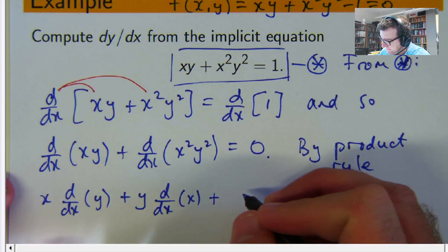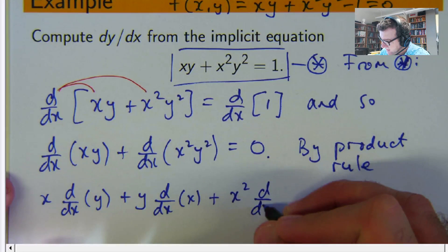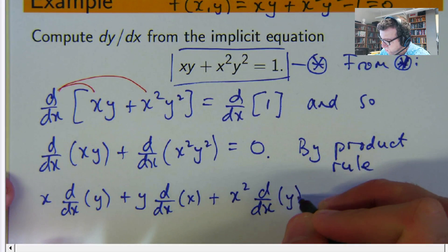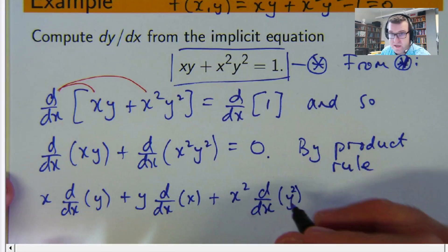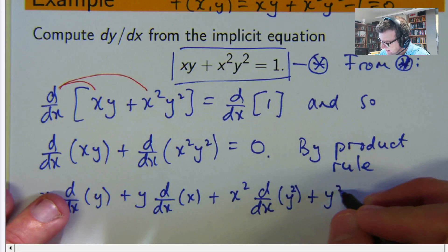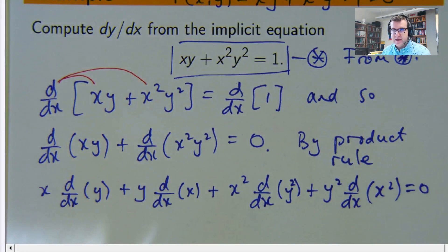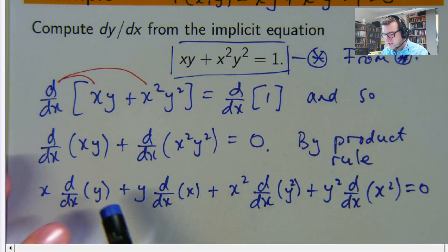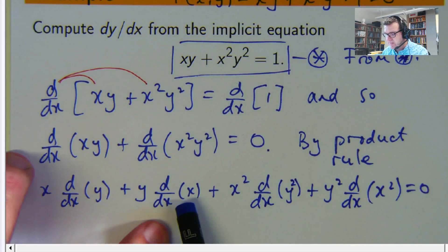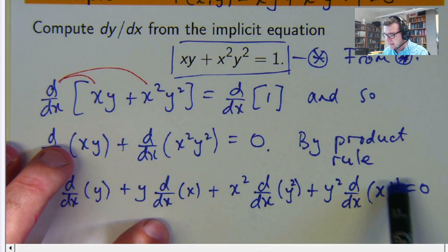Now this is just dy/dx. This is easy to calculate, it'll be one. And you just do the same with the next bracket. So it's going to be x squared times the derivative of y squared. So this is just dy/dx. This is going to be one. The question is what is that going to be? And that's going to become 2x.